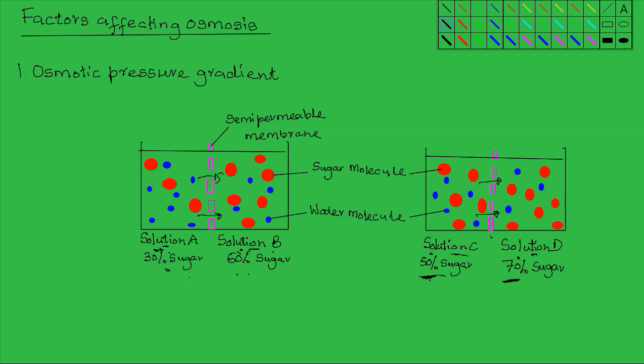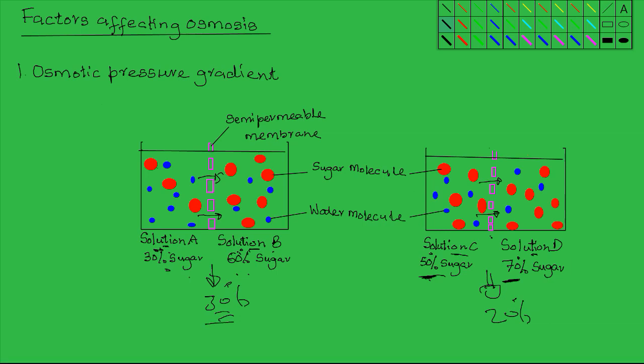The difference in osmotic pressure between the two solutions is what forms a gradient. In the first case, there is a gradient or a difference of 30%, while in the second there is a difference of 20%. This gradient determines the rate at which osmosis will take place. The rate of osmosis is going to be higher from solution A to B than from solution C to D, because of the higher osmotic pressure gradient between solution A and B. So the osmotic pressure gradient between two solutions determines the rate at which osmosis will take place.